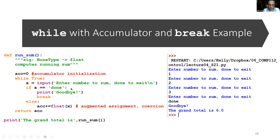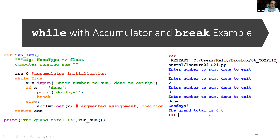They type 'done'. Is x == 'done'? Yes. It prints 'goodbye' and we hit break. We jump out of the while True loop — we're still inside the function. The next thing the function encounters is return accumulator, so we return 6. That gets passed back to the print statement, which outputs 'the grand total is 6.0'. It's a float because of the float() coercion applied to x.